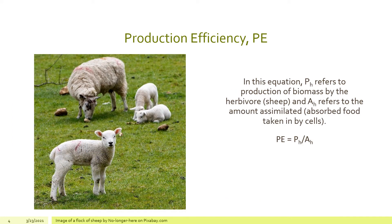Next we will talk about production efficiency, or PE. In this equation, PE equals P sub H over A sub H, where P sub H refers to the production of biomass of the herbivore and A sub H refers to the amount of food assimilated by the herbivore.